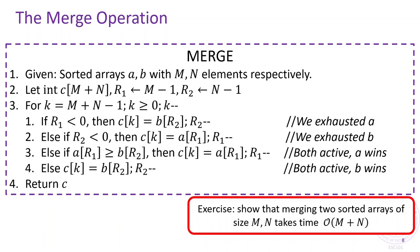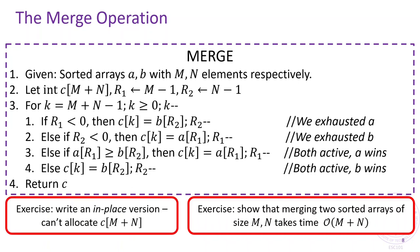Can you do away with this requirement? Can you rewrite the merge algorithm so that it does not need to allocate a fresh array of size m plus n and instead uses the arrays a and b themselves to store the merged array?